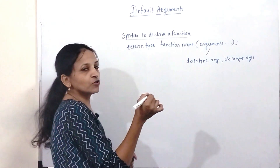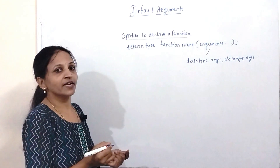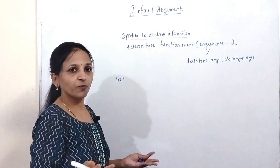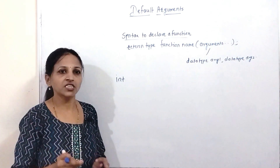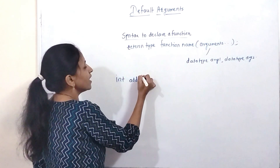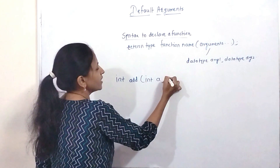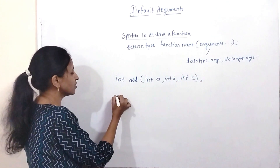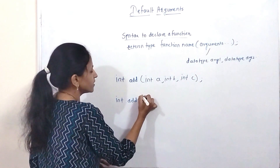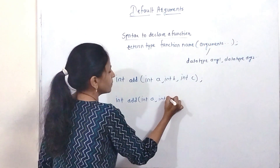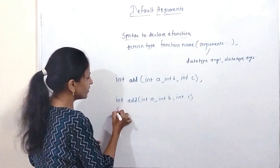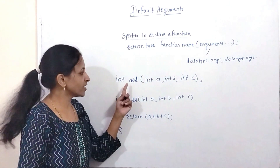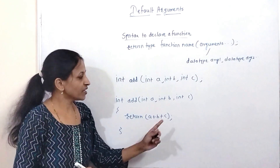For example, let's say I want to do addition of three numbers. The function returns one integer value — the addition of three integers. The function name is 'add' and we pass three arguments: A, B, and C. This is the function declaration. In the definition, we write: int add(A, B, C) and return A + B + C. This is how we normally write a function declaration and definition.